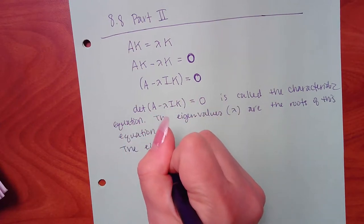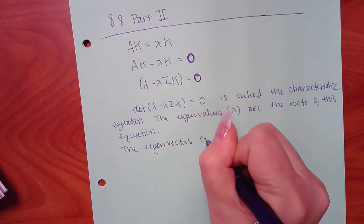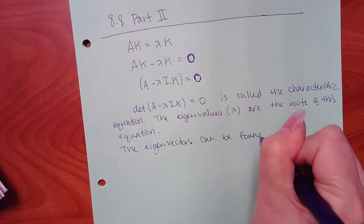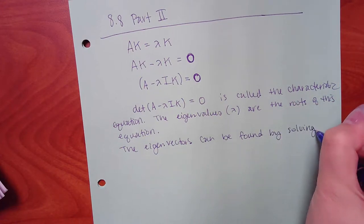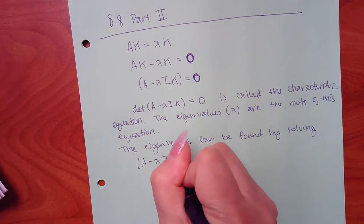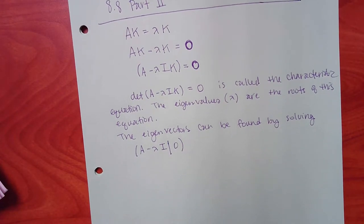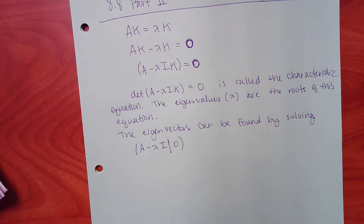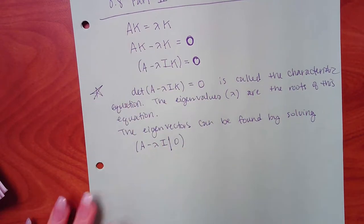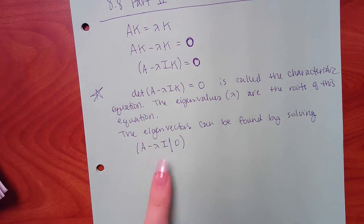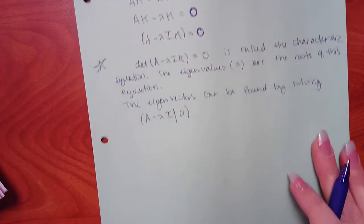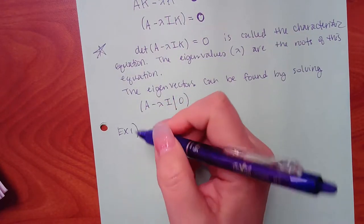The eigenvectors K can be found by solving the matrix equation equal to zero. This is our strategy: find the eigenvalues first, then once I know the eigenvalue I can solve for the corresponding K vector.